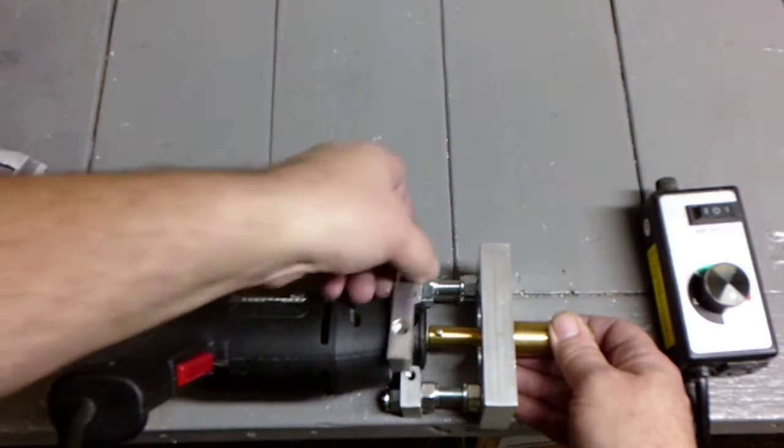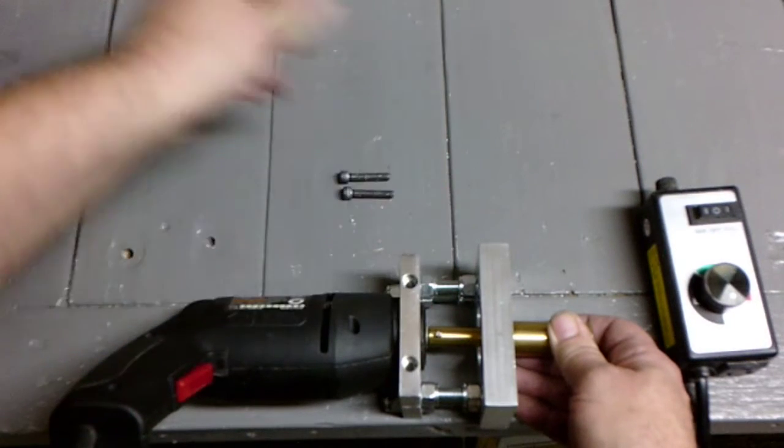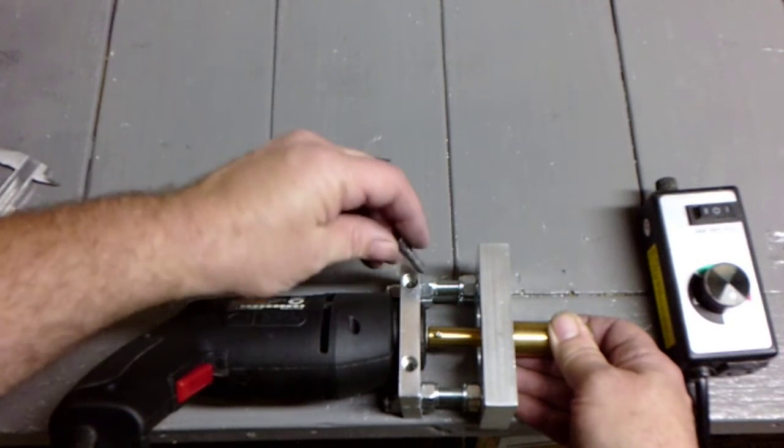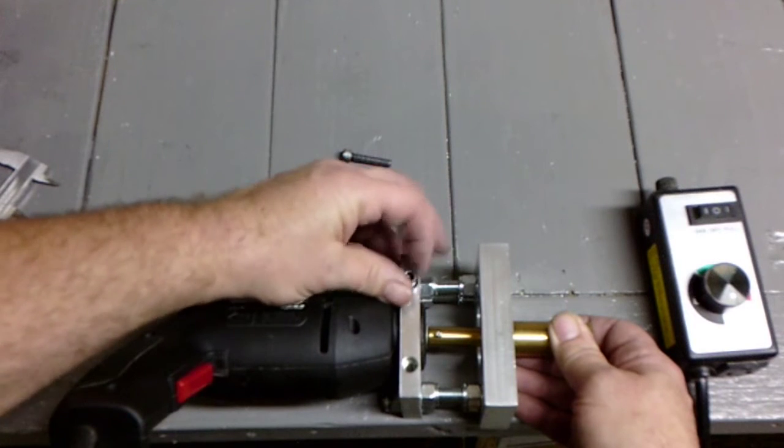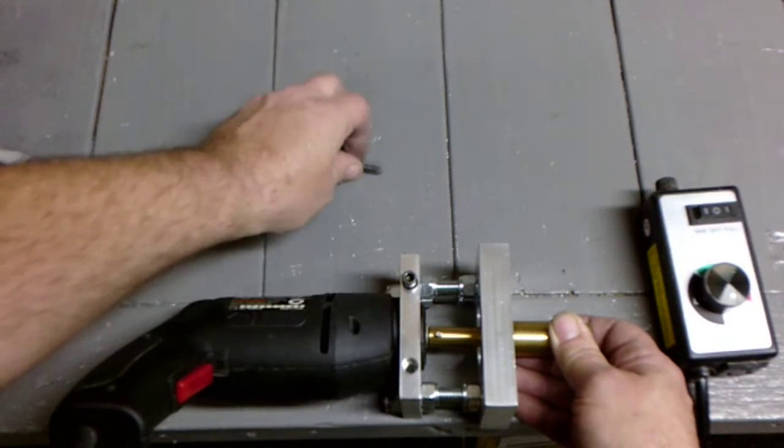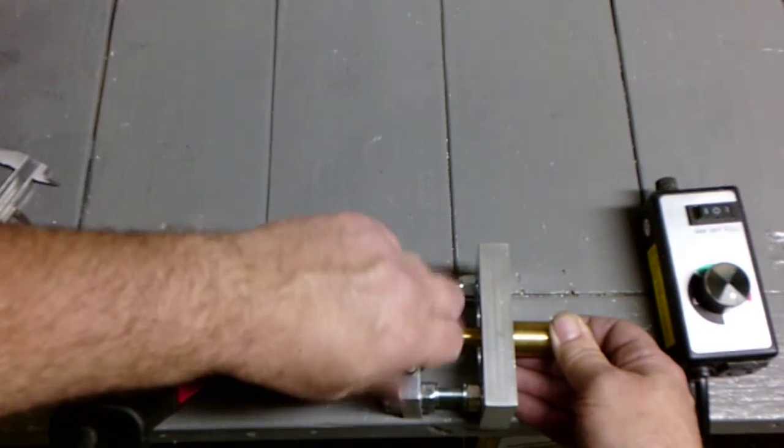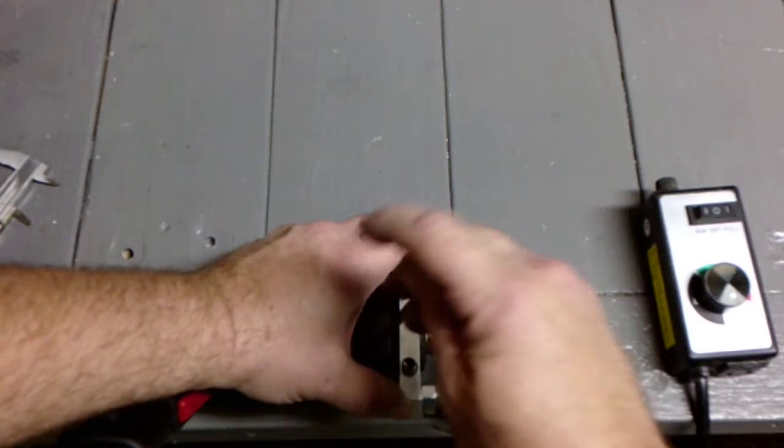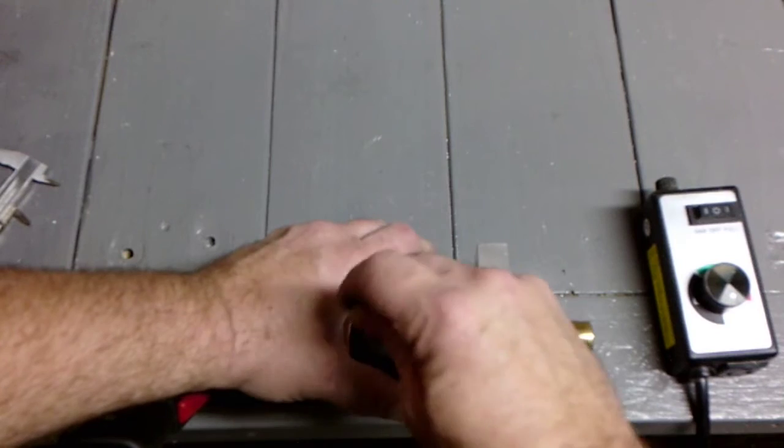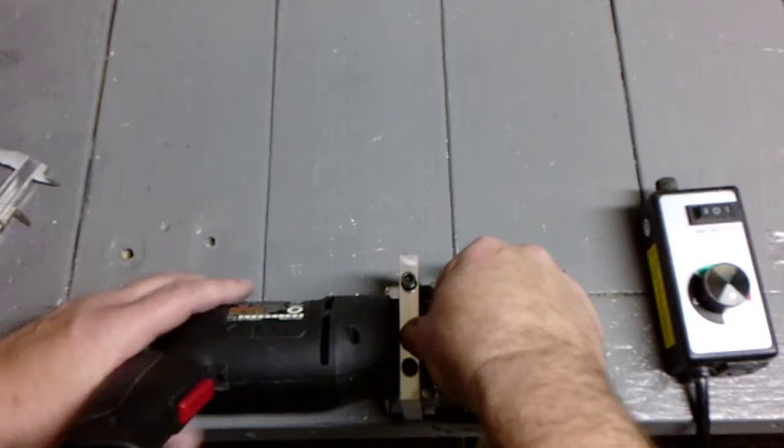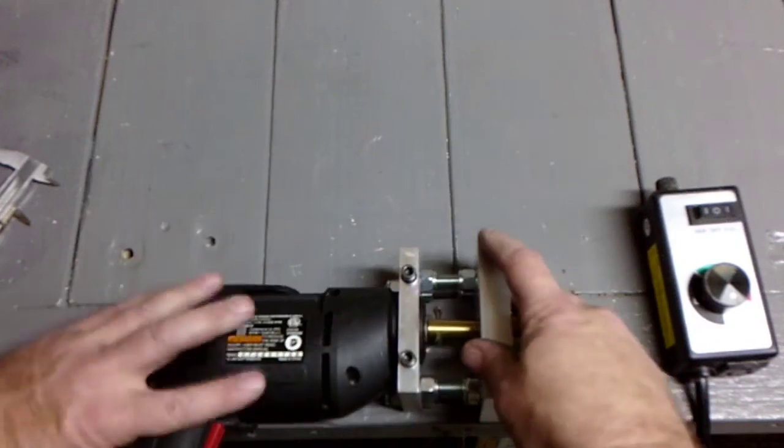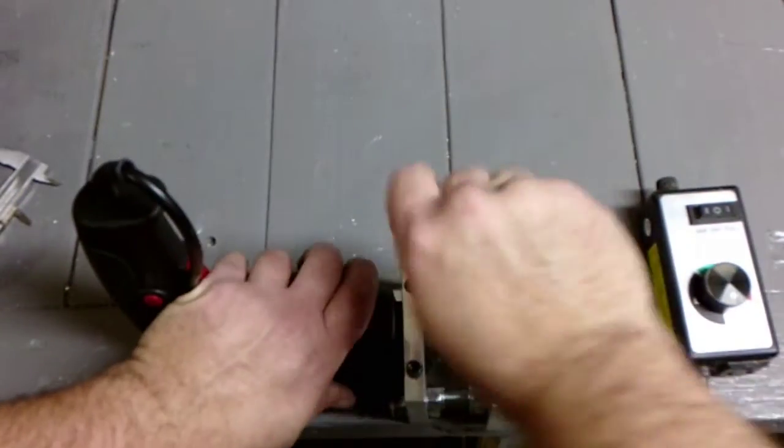The upper part of the bracket is then put in place and the quarter-twenty screws put in loosely. The drill is moved into position before tightening down the screws.